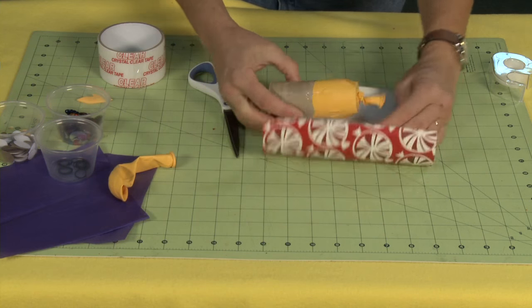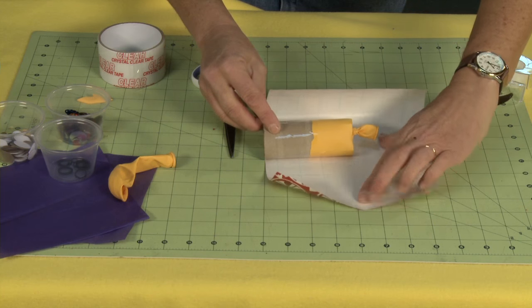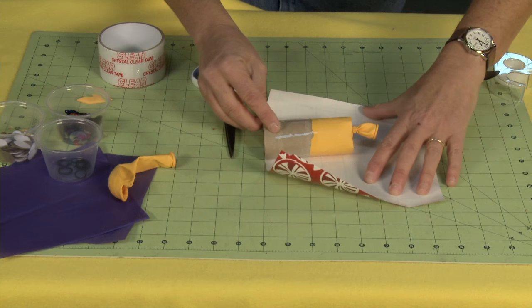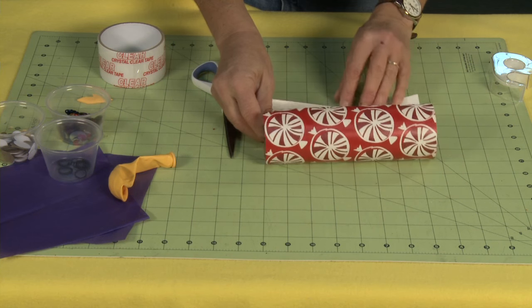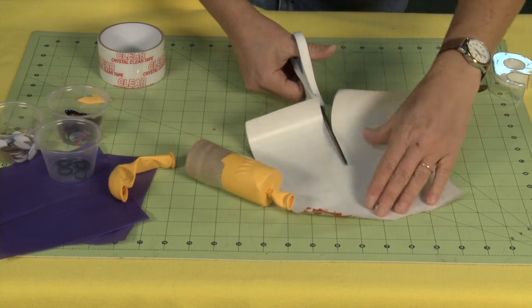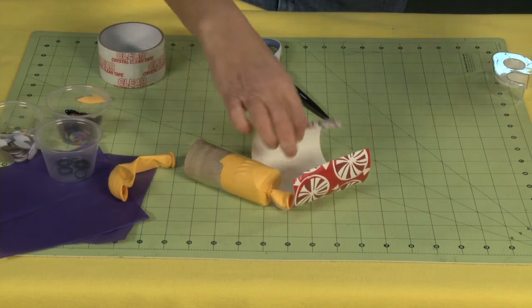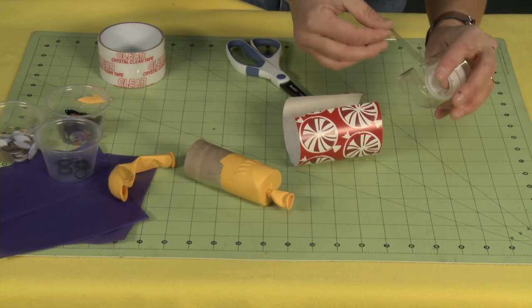And to decorate it, what I'm going to do is use my piece of gift wrap paper here. I'm just going to measure. And what's nice here is that I have these lines. And I'm just going to line it up there, trim right along the bottom here.